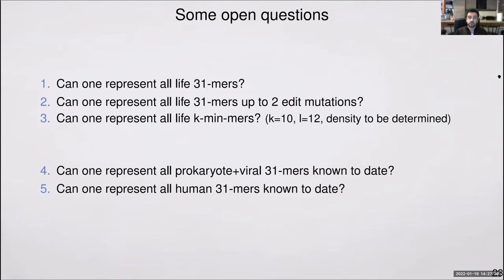I'll leave you with some open questions that have been bugging me recently. Can one represent all live 31-mers? Do we saturate the space of 31-mers with life? If we don't, then can one represent all live 31-mers up to two edit mutations? That would reduce the space quite a bit and still be searchable. If you cannot do that, then can you represent all live k-minimizers for reasonable parameters? And if you still cannot do that, is it possible to represent all prokaryotic, so bacterial and viral, 31-mers known to date? Maybe this seems to be an achievable goal nowadays, especially given methods that can do compacted De Bruijn graphs over large collections of bacteria. If you still cannot do that, can you represent all diploid genomic human 31-mers? I don't even know the answer to this question myself. I suspect it's a yes.